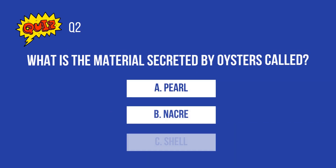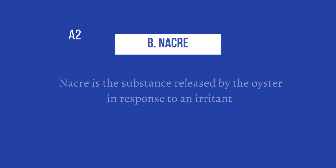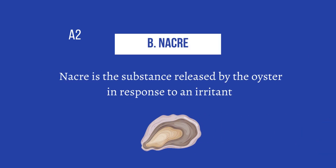Question 2: What is the material secreted by oysters called? A. Pearl, B. Nacre, C. Shell. The answer is B, Nacre. Nacre is the substance released by the oyster in response to an irritant.